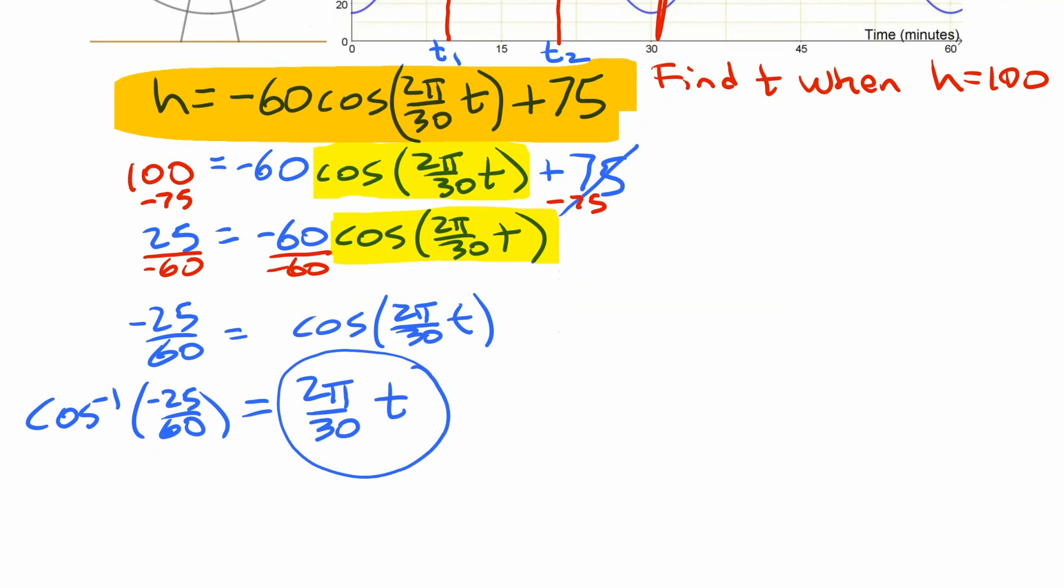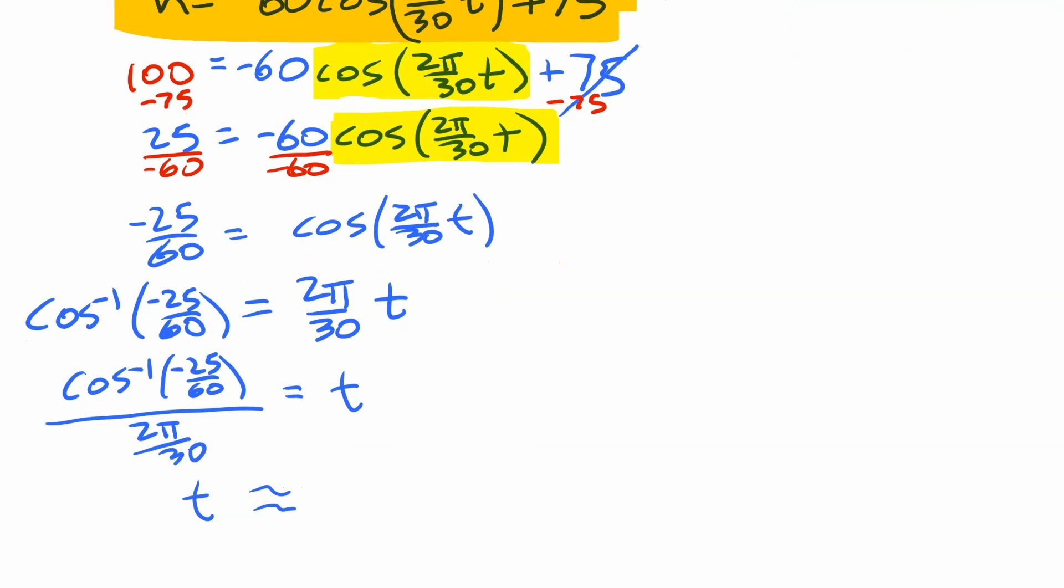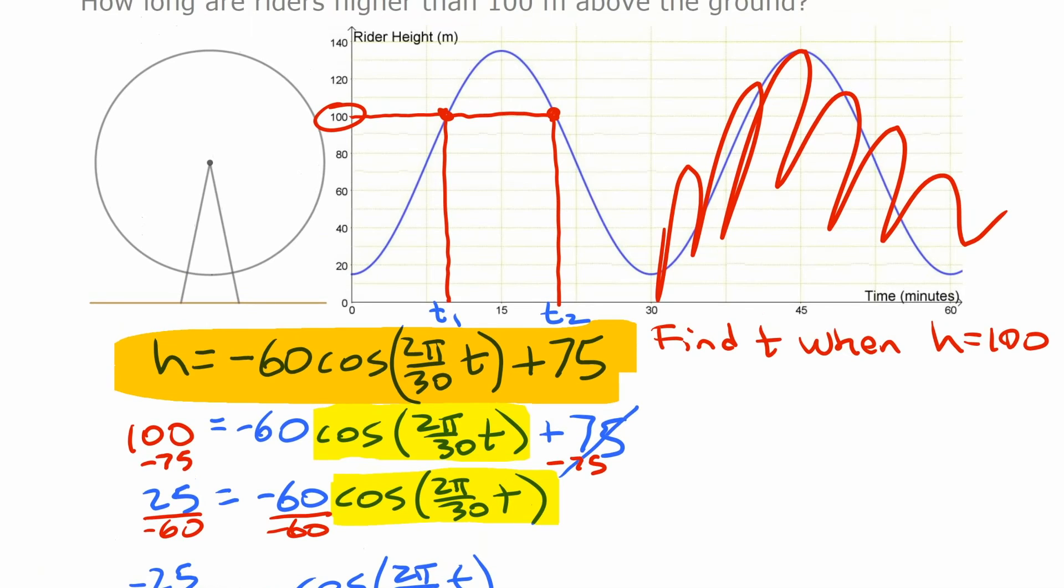Now our last step to isolate t here is to divide by that value that it is multiplied by, so t is going to be cos inverse negative 25 over 60 divided by 2π over 30. When you go and do that, you get a time value that is approximately 9.55. Now to see what that represents, we're going to go back to the graph here. What that represents is actually time 1 on our graph. Time 1 is 9.55. You can see that kind of makes sense in the situation because at 15 minutes you're up at 135, and halfway before that at 7.5 minutes you're only at 75 meters, and so 100 meters somewhere in between there, that makes sense.